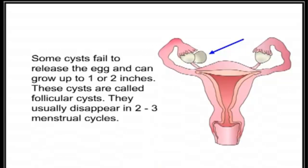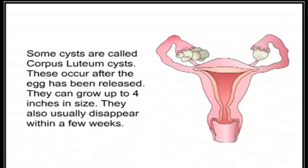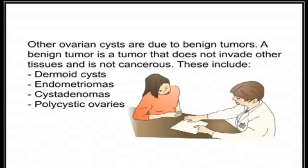Some cysts fail to release the egg and can grow up to one or two inches; these are called follicular cysts and usually disappear in two to three menstrual cycles. Some cysts are called corpus luteum cysts, which occur after the egg has been released, can grow up to four inches, and also usually disappear within a few weeks. Other ovarian cysts are due to benign tumors — tumors that do not invade other tissues and are not cancerous — including dermoid cysts, endometriomas, cystadenomas, and polycystic ovaries.